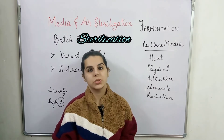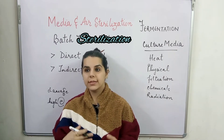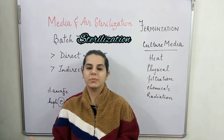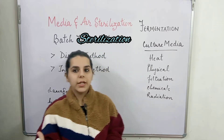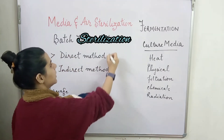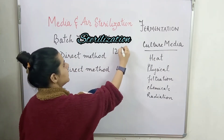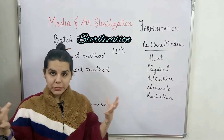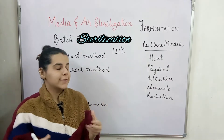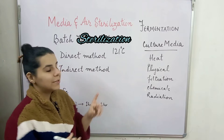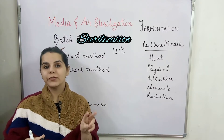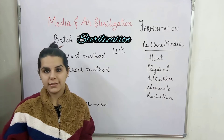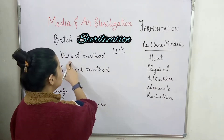In batch sterilization, sterilization takes place in batches. The recommended temperature is 121°C. There are two methods through which we can sterilize in batches: one method is direct and the other is indirect.